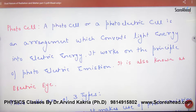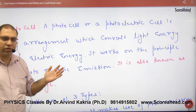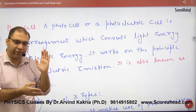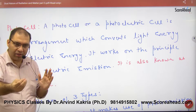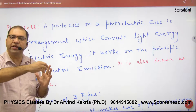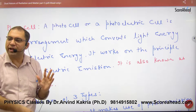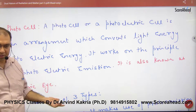A photo cell or photoelectric cell is an arrangement that converts light energy into electric energy. Photons fall on the photosensitive plate, electrons are emitted and pass through the circuit, generating a current. This is a photocell.